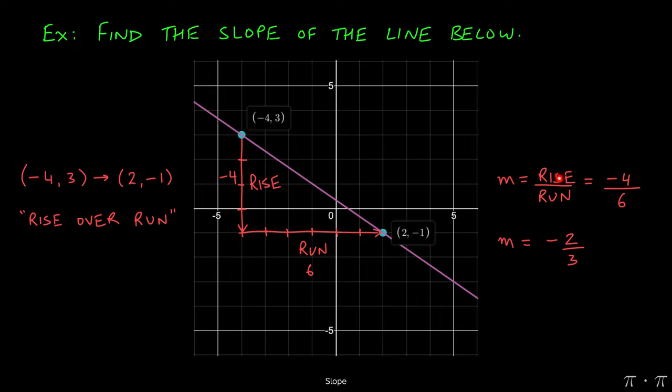The slope is always given by the rise over the run, negative 4 over 6, which simplifies to negative 2 over 3.